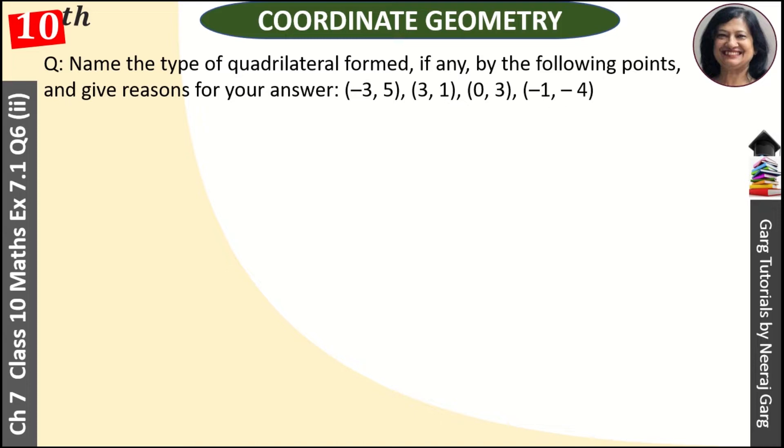Four points are given and we need to find what type of quadrilateral they will form. First, let's name these points - let's take this as A, this as B, this as C, and this as D.